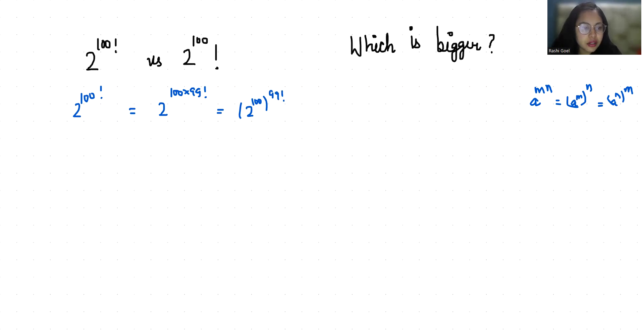Now this is our LHS and this is RHS. (2^100)! I can write as 2^100 × 2^99 × 2^98 and so on till 2^3 × 2^2 × 2^1.